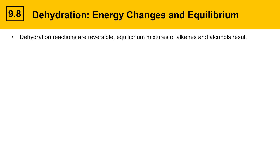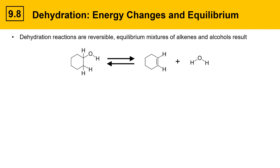Dehydration reactions are reversible, and equilibrium mixtures of alkenes and alcohols will result. Here's a representative example showing cyclohexanol becoming cyclohexene and water. This is a typical dehydration reaction, and the equation that describes the energy changes in this reaction is shown here.